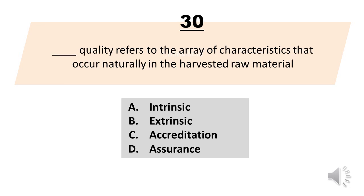Blank quality refers to the array of characteristics that occur naturally in the harvested raw material. A. Intrinsic. B. Extrinsic. C. Accreditation. D. Assurance. The correct answer is Letter A, Intrinsic.